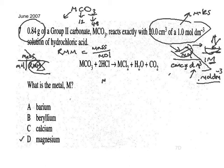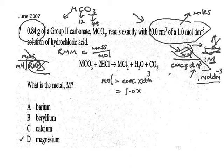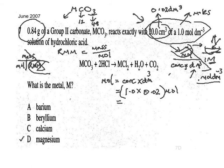Using the rearrangement triangle, moles equals concentration times the volume in cubic decimetres. Using the figures given, let's work out the number of moles of hydrochloric acid used in this reaction: concentration 1.0 times the volume in cubic decimetres. To change 20 cubic centimetres to cubic decimetres, we divide by 1000: 20 ÷ 1000 = 0.02 dm³. So the number of moles comes out to be 0.02 moles of HCl.